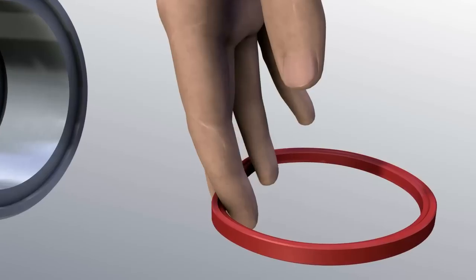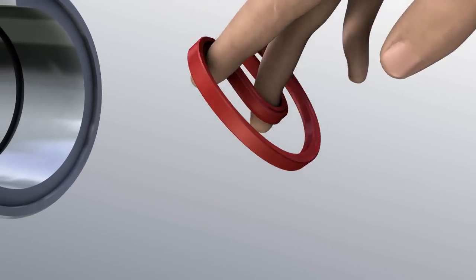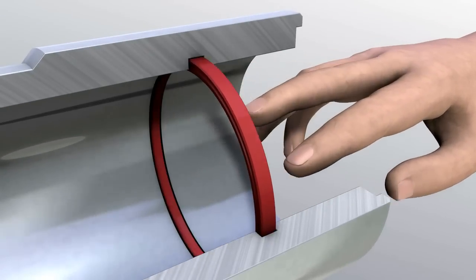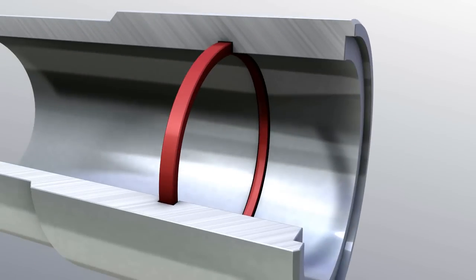Basically, it should be seen to it that the seal is not bent. On seals incorporating a pressure relief bore, the latter should not be distorted, as this might cause the seal to break.